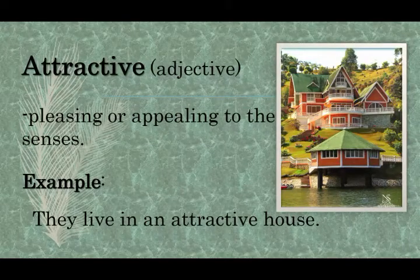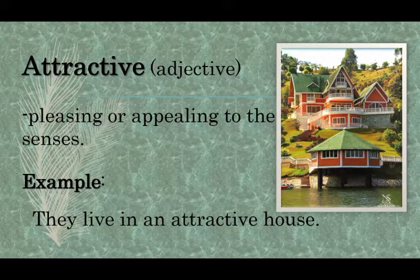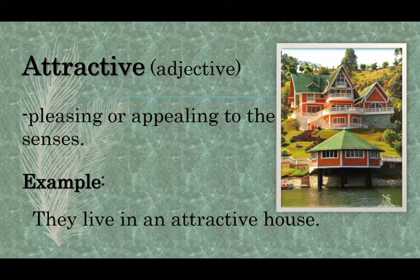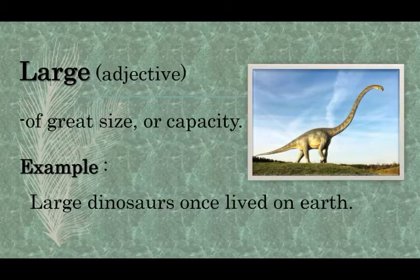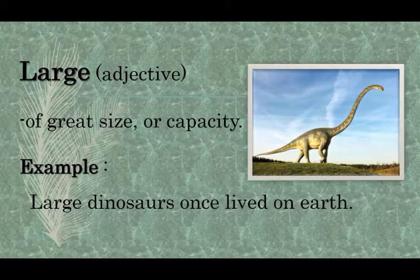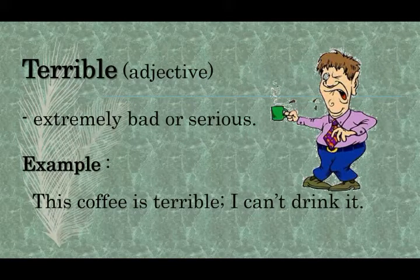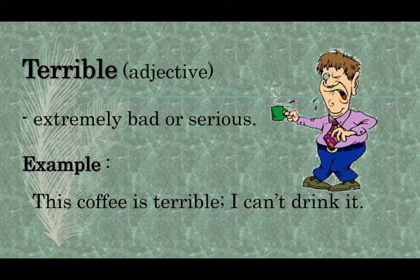Let me discuss some new vocabulary from the reading. The first word is 'attractive.' Attractive is an adjective. It means pleasing or appealing to the senses. Example: they live in an attractive house. The second word is 'large.' Large is an adjective. It means of great size or capacity. Example: large dinosaurs once lived on earth. The third word is 'terrible.' Terrible is an adjective. It means extremely bad or serious. Example: this coffee is terrible, I can't drink it.